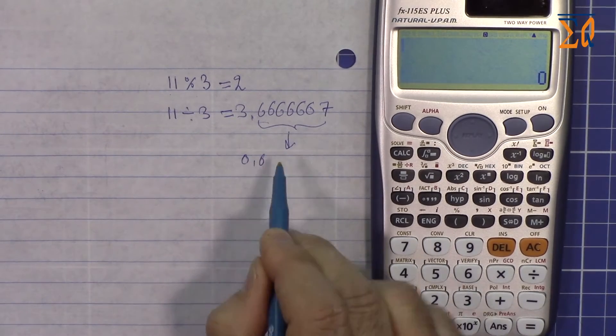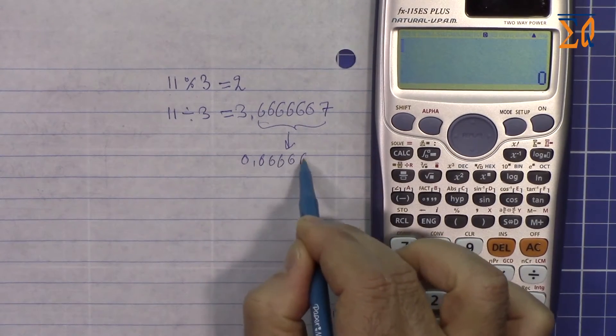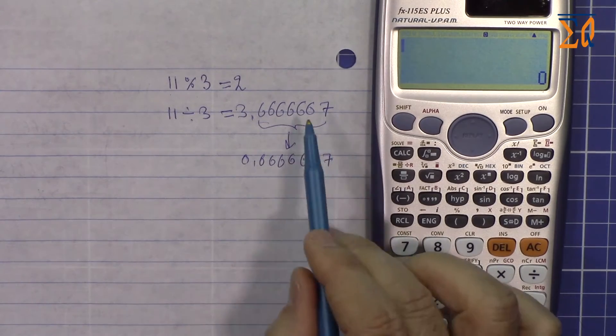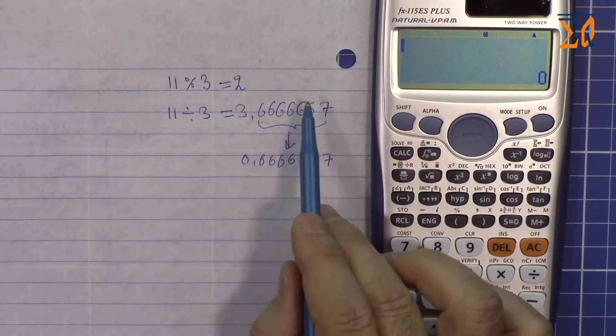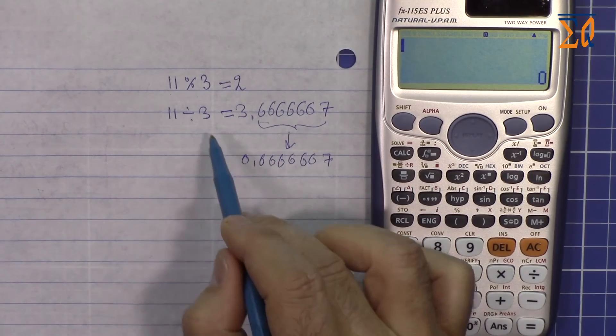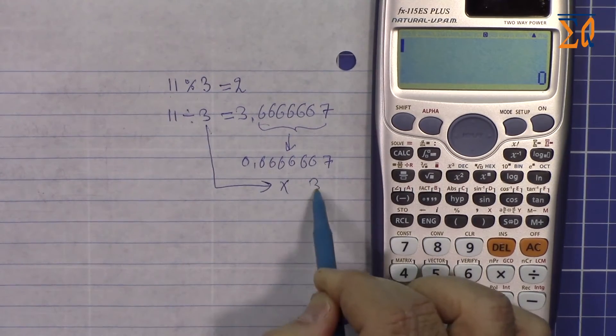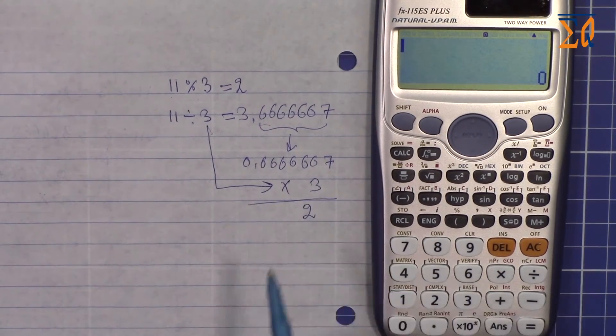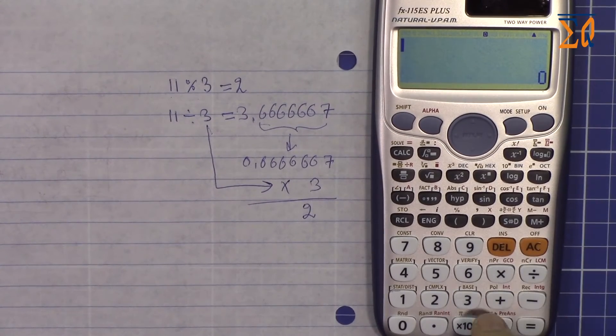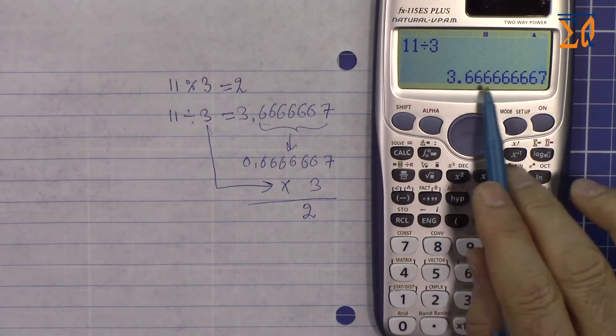Because we have divided this by 3, so we have 3 times of this, which is multiply by 3, and the answer is 2. Let's do it in a calculator. So 11 divided by 3, this is the answer.